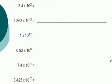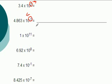Now go ahead and try to change these into standard form. You do not need to use your calculator, but you can. Remember: if you're moving to a positive exponent, you move the decimal to the right; if it's a negative exponent, you move the decimal to the left. Press pause and try to figure out what these would be in standard form, then come back and check your answer.